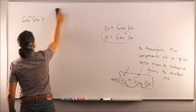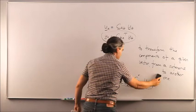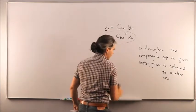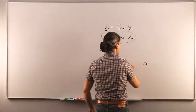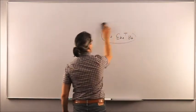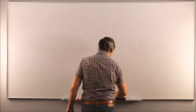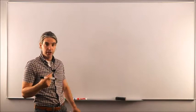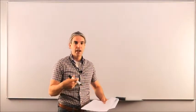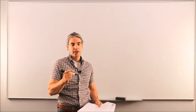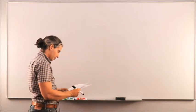Now that we understand both uses of rotation matrices, let's look at another interesting property: successive or consecutive rotations. Rotation matrices can be multiplied together by making sure the subscripts work out — matching inner subscripts cancel, giving you the composite rotation.